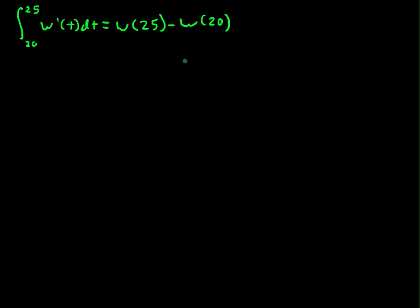If I add w of 20 to both sides, we can see that w of 25 must equal the integral from 20 to 25 of w prime of t dt plus that starting temperature for this interval, plus w of 20. It would be worth our while, at least for our work, to substitute these functions in.